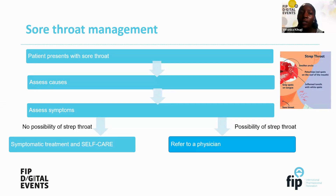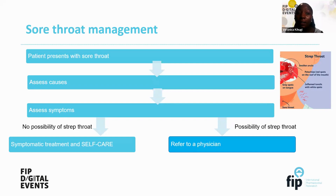The steps in management: when patients present with sore throat, we should assess the causes, do proper clerking, ask the right questions about symptoms and what they have done about it. If needed, you can even use a torch to check for visible symptoms, so we will be able to assess the possibility of strep throat based on the presenting symptoms.